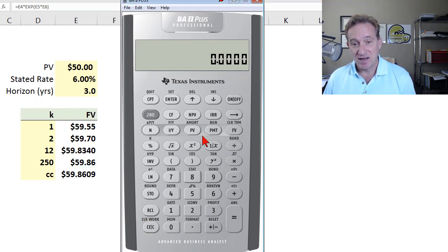Now I did this manually, but the discrete versions, I can use the built-in time value of money keys. So let's just do this again monthly, but just using the time value of money keys. And so starting with N, recall we said it's three years times 12 periods per year. Monthly is 36 periods. That's my N.